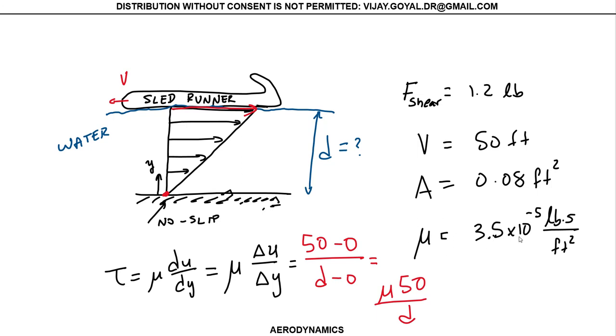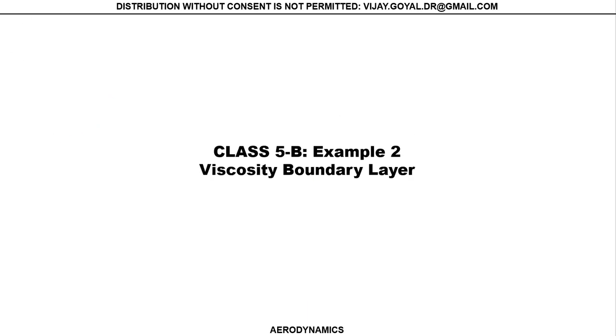So we are talking about this whole area of the sled and the viscosity of my water. You can see the problems are not very complicated. You just have to know what you're given and what you're asked for. In this particular example, we were just asking what was this distance, and we were given enough information to calculate my shear flow. So this is another example of how we can use the boundary layer, the boundary layer viscosity boundary layer applications.